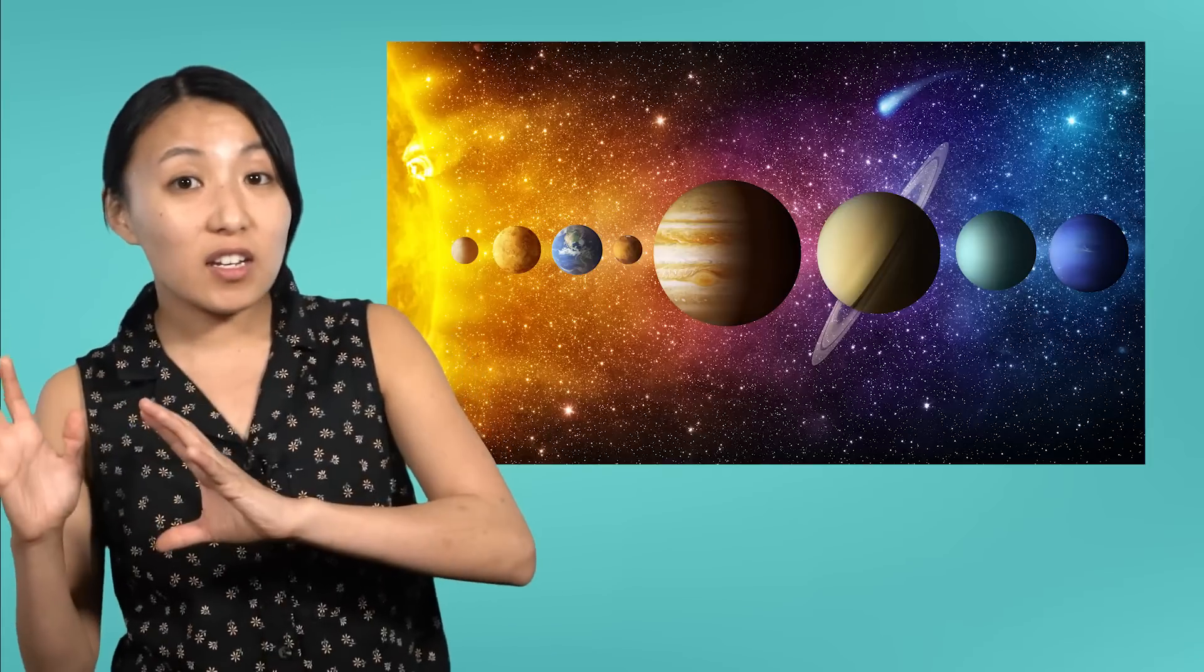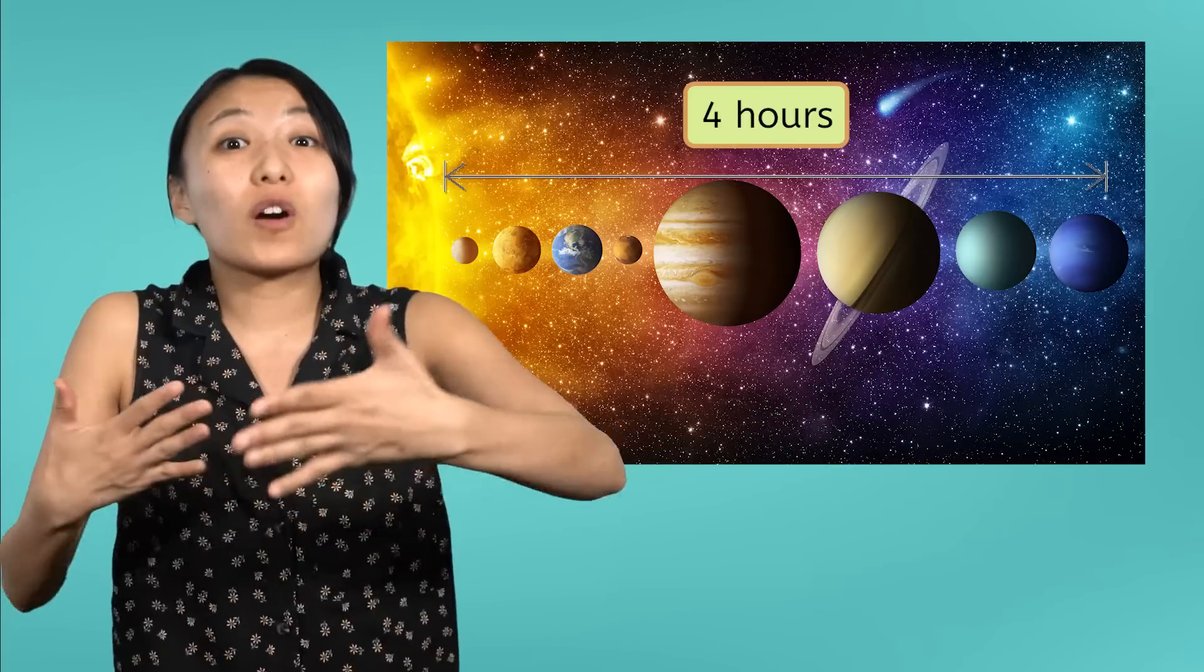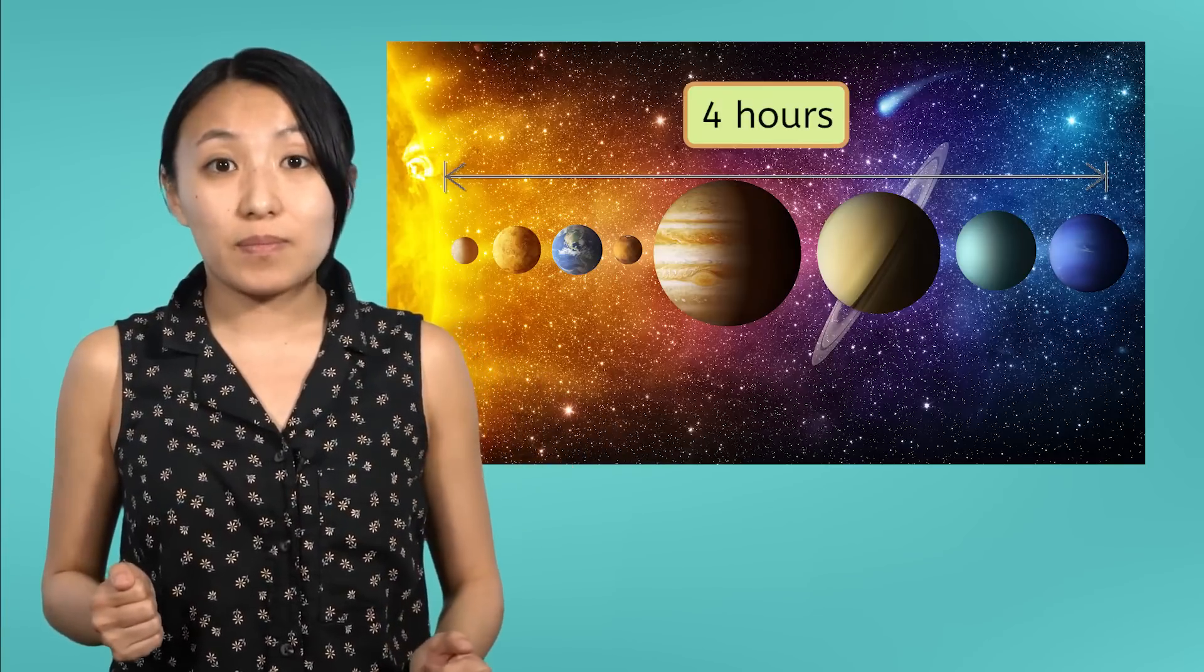Light is incredibly fast. In fact, it's the fastest thing in the universe. But the universe is truly huge. At a speed of over 670 million miles per hour, it takes light from the sun about 8 minutes to reach Earth, and about 4 hours for it to reach the farthest planet in our solar system, Neptune.